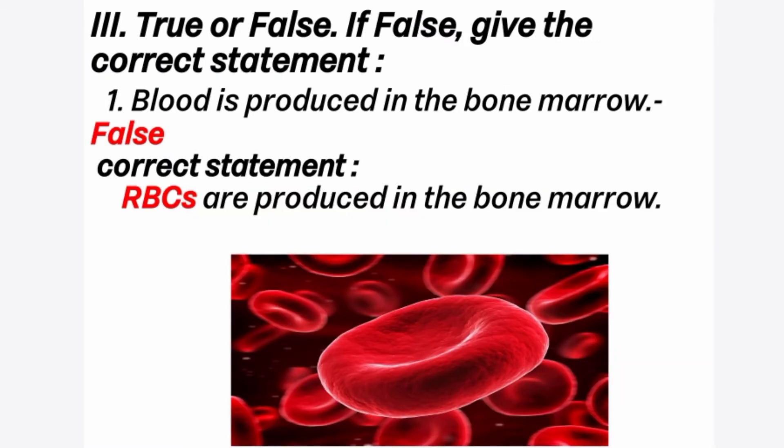True or false — if false give the correct statement. First question: blood is produced in the bone marrow. The answer is false. Correct statement: RBCs are produced in bone marrow. There are three types of blood cells — RBCs, WBCs and platelets. WBCs are also produced in bone marrow, as well as in the spleen and lymph nodes.